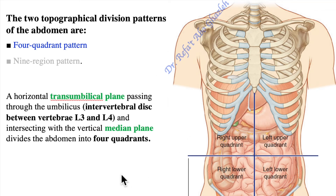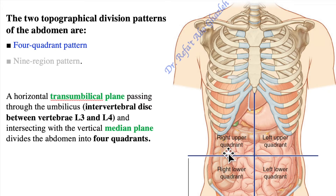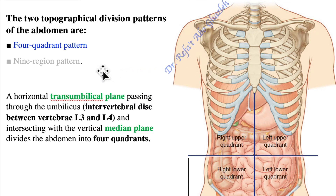Division patterns of the abdomen: the abdomen can be divided using two patterns. The first one is the four quadrant pattern, or it can be divided into nine regions.